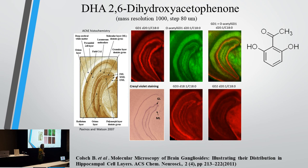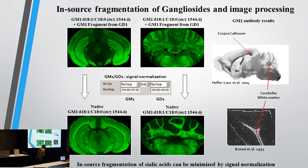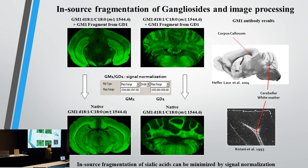Like everything good, it has its faults. The other problem you get with gangliosides is that whether you're using high or low fluence, they fragment. You want to see your GDs, but you end up with GM1, because they lose sialic acid. So you have to look at what you get very carefully, and if you normalize, you can decrease the effect and see better what you have.